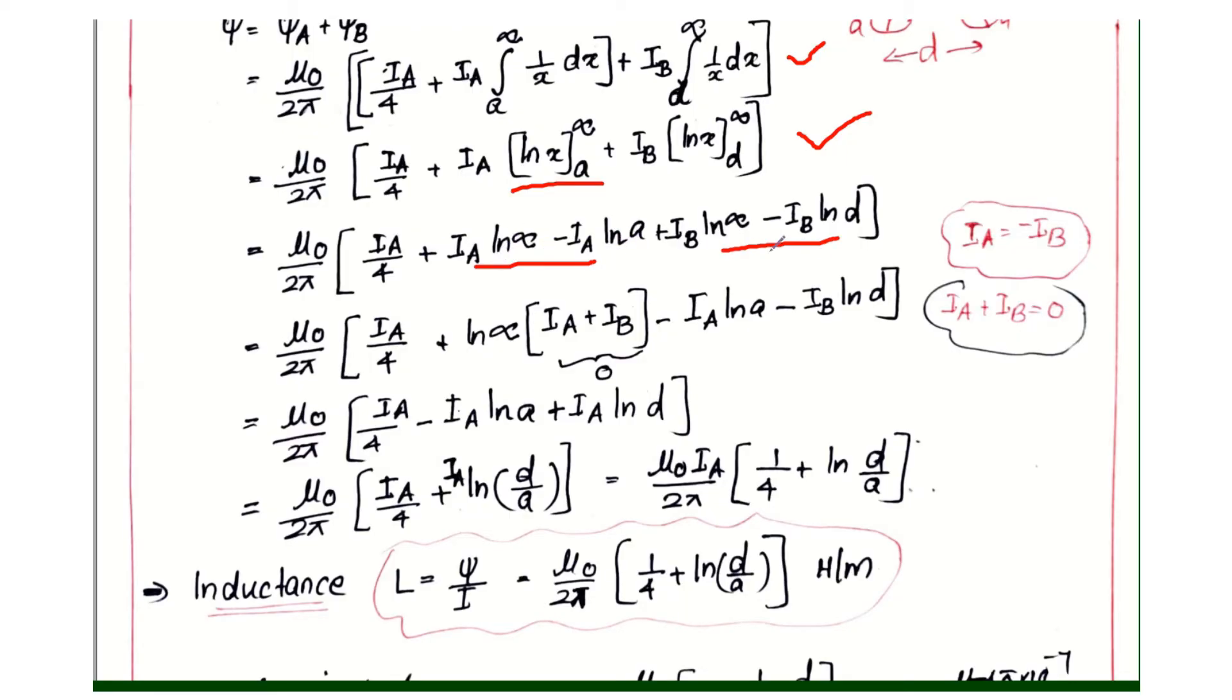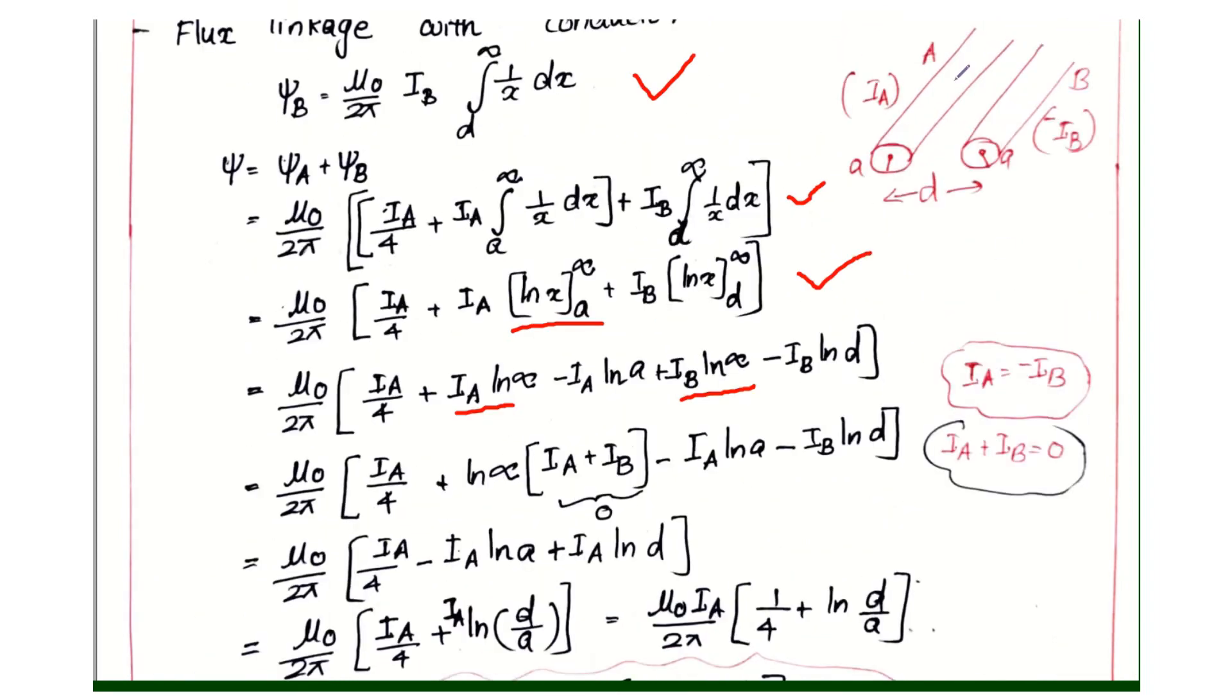We will write the terms: μ₀/2π times ln infinity into IA plus IB, then minus IA ln a minus IB ln D.